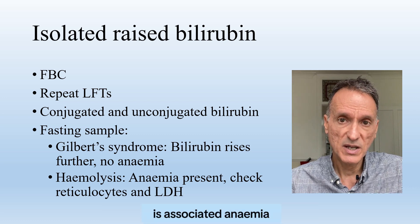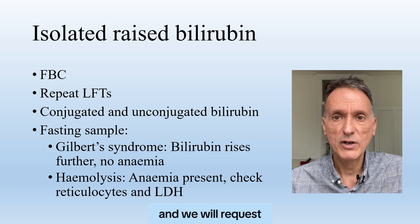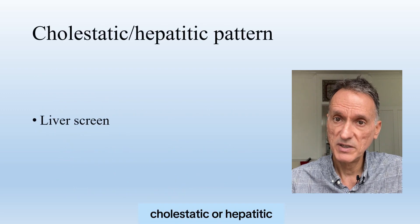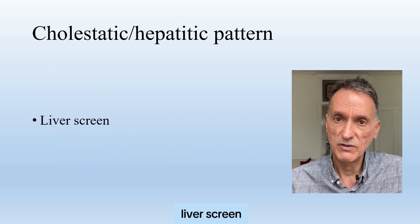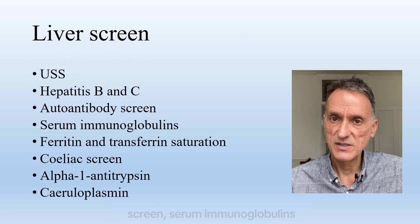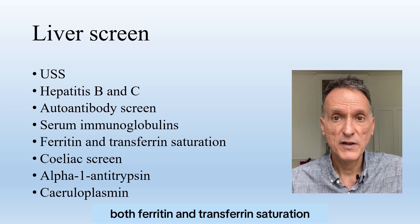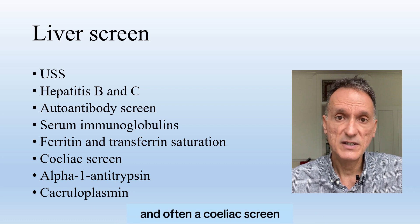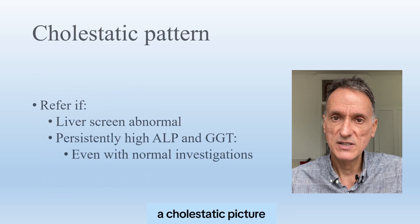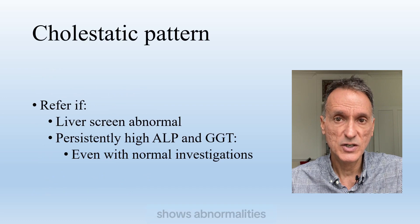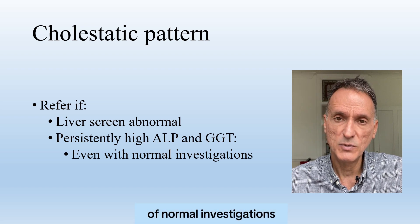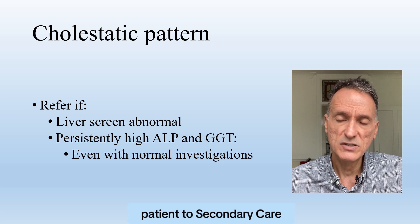If there is associated anaemia, we will need to work up for haemolysis and request a reticulocyte count and LDH. If the pattern is cholestatic or hepatitic, we will do a liver screen. This should include an ultrasound, hepatitis B and C screening, an autoantibody screen, serum immunoglobulins, both ferritin and transferrin saturation, and often a coeliac screen, alpha-1 antitrypsin levels, and ceruloplasmin. If a patient has a cholestatic picture and the liver screen shows abnormalities, or the ALP and gamma-GT remain high even with normal investigations, we will refer the patient to secondary care.